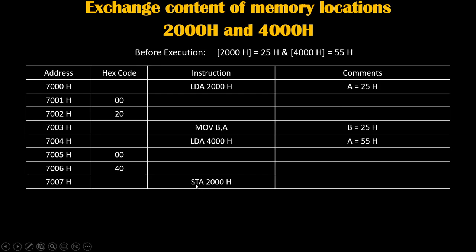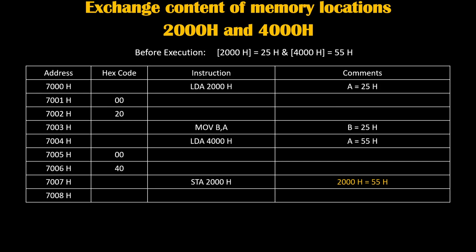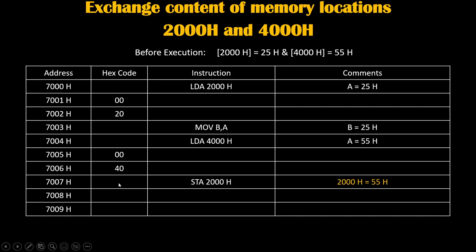Then we will write instruction STA 2000h. STA stands for store accumulator, so whatever value the accumulator is holding will get stored on 2000h. The accumulator was holding 55h, so that will get stored on 2000h — therefore 2000h will become 55h. We have successfully transferred 55h to 2000h, so half of the program is over. STA is a 3-byte instruction, so it will take 3 addresses: 7007, 7008, and 7009. On 7007 we will write the code for STA, and 2000h we will write in reverse order as 00 and 20.